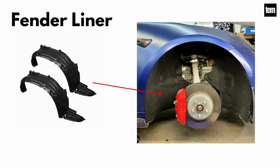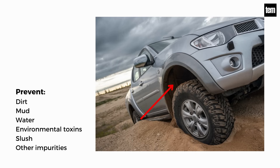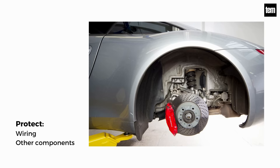Fender liner. In every type of vehicle, each wheel has a separate fender liner. It functions to prevent dirt, mud, water, environmental toxins, slush, and other impurities from seeping into the engine bay and causing severe corrosion and harm. It also helps protect the wiring and other components inside the wheel well from corrosion.